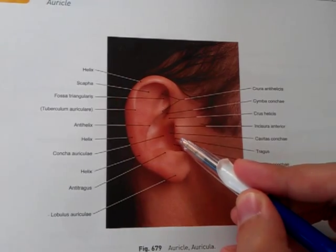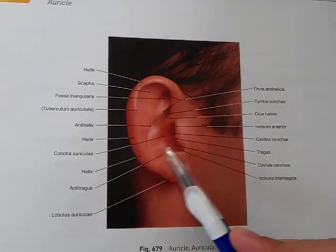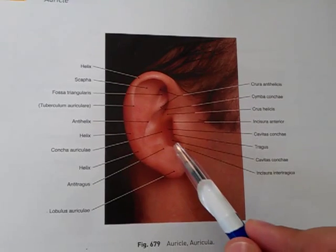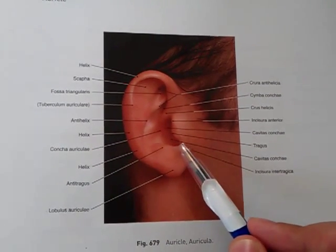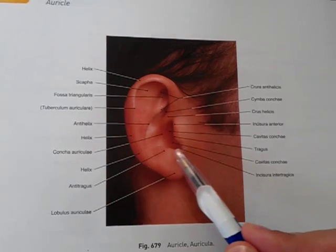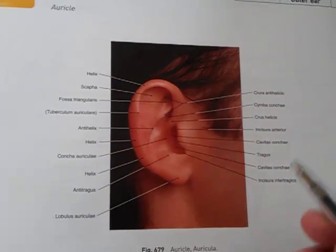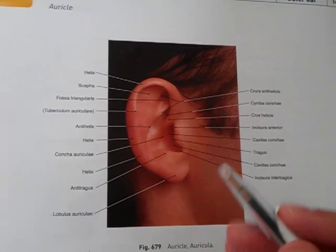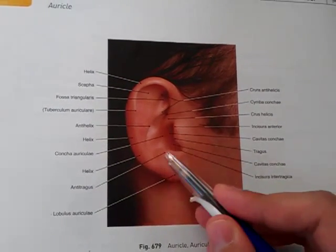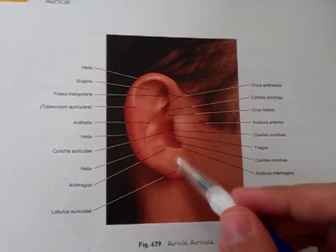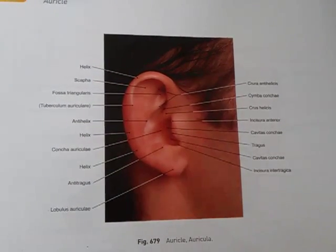This is called the tragus, this is the antihelix, and this is the intertragic notch. On the tragus and antihelix, you have strong hairs, especially in males in old age.